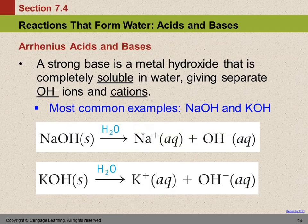Acids — we've learned to name them and write formulas. They're easy to recognize: they start with H in their formula and have the word acid in their name. But we also need to understand what a base is. Arrhenius was a scientist from Sweden who did a lot of work with acids and bases. There are three major definitions of acids and bases, and your book uses this term, but you don't need to know that these are Arrhenius acids and bases.